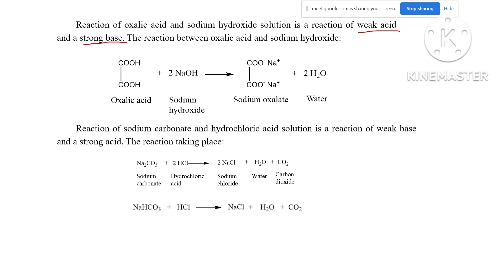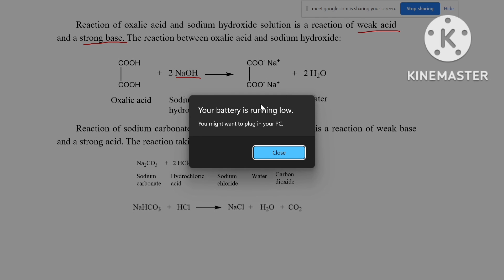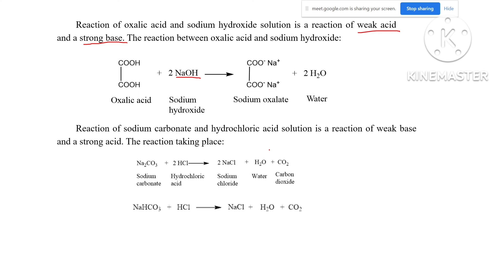The second reaction is between a weak acid and a strong base. The example of the weak acid is oxalic acid, and the strong base is again sodium hydroxide. When these two react, they form salt and water — specifically sodium oxalate as the salt and water. Since oxalic acid is a diprotic acid, it furnishes 2 H plus ions, so we need 2 moles of sodium hydroxide for the complete neutralization of oxalic acid, leaving 2 molecules of water and sodium oxalate.